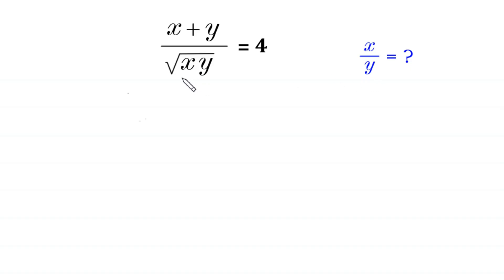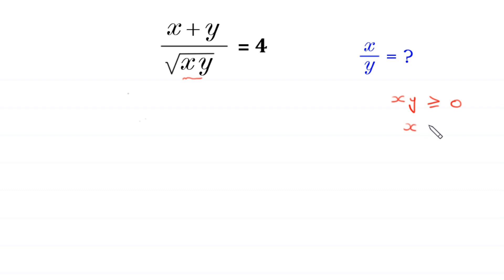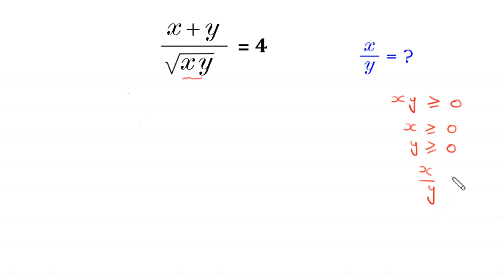Since this expression x times y is under a square root, x times y must be greater than or equal to 0. This x times y can only be greater than 0 if x is greater than 0 and y is greater than or equal to 0. So this x over y must be greater than or equal to 0.